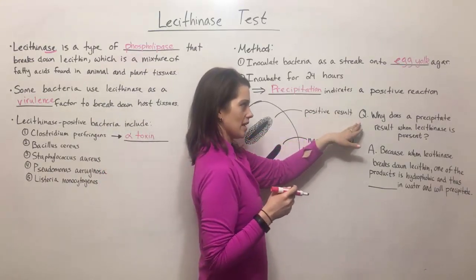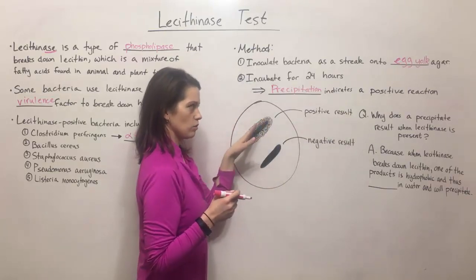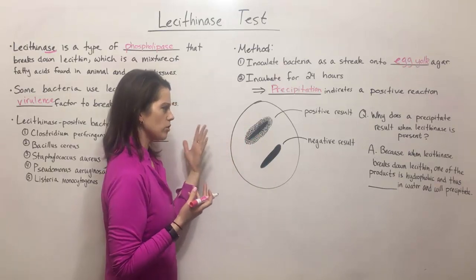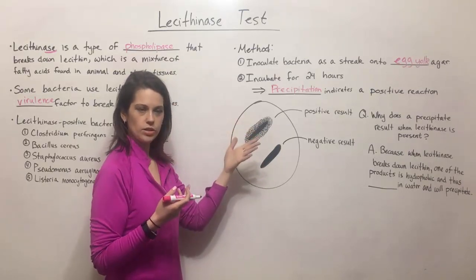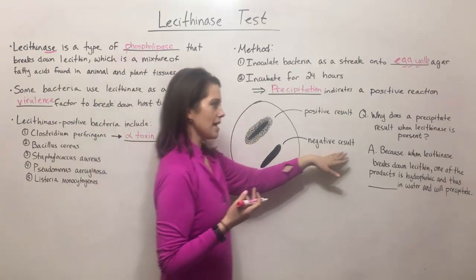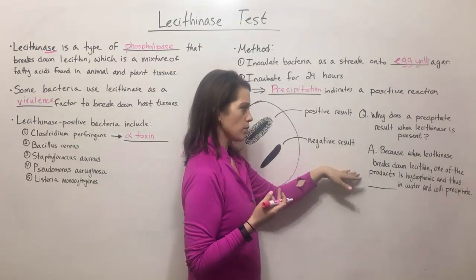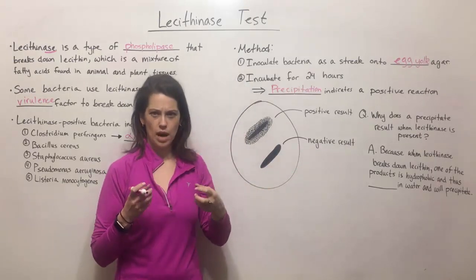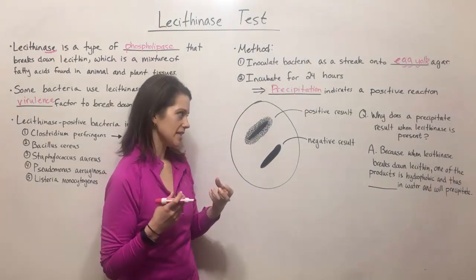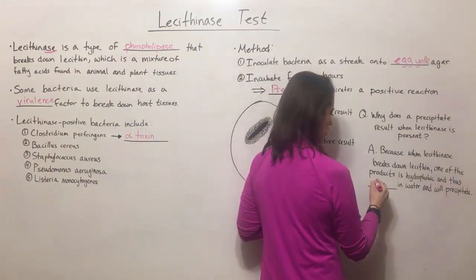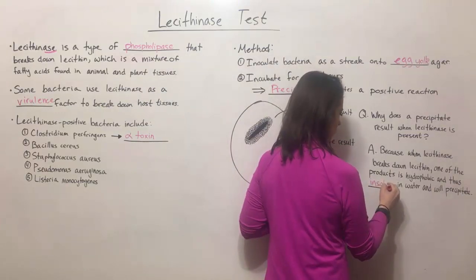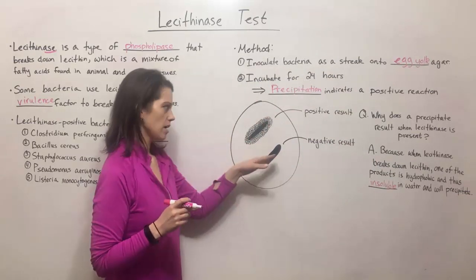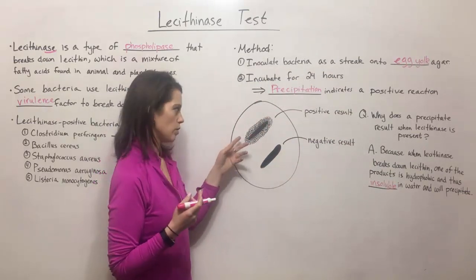You might be asking yourself why this precipitate results when lecithinase is present. When lecithinase breaks down lecithin, one of the products is a hydrophobic diglyceride with long fatty acid tails, which makes it insoluble in water. Since this is an aqueous medium, the insoluble diglyceride will precipitate out, producing the white opaque zone.